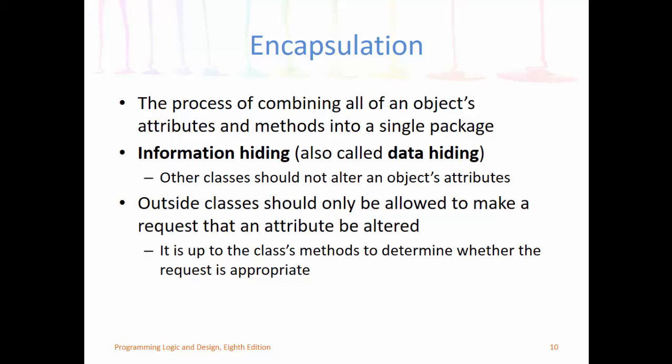other classes should not be able to alter an object's attributes. The outside classes should only be allowed to make a request that an attribute be altered. That's why it's very common to see a class definition contain set methods and get methods. It's up to the class's methods to determine whether the request is appropriate.